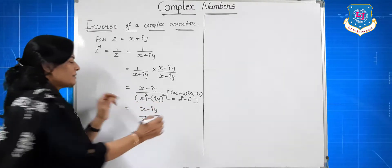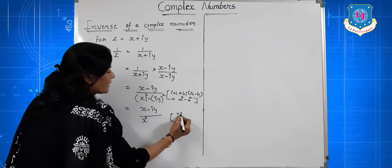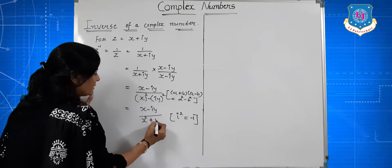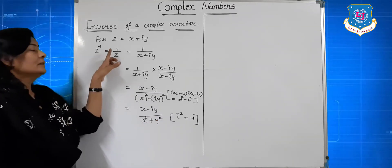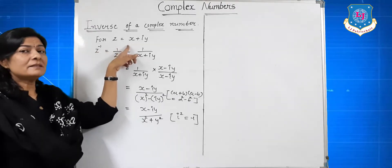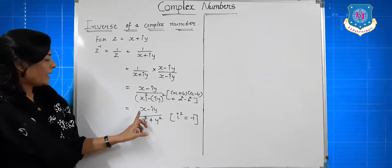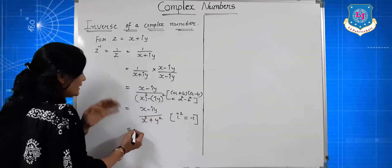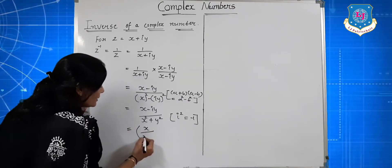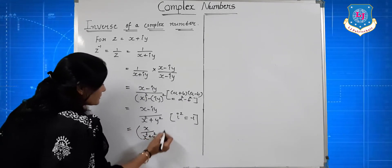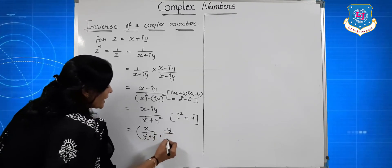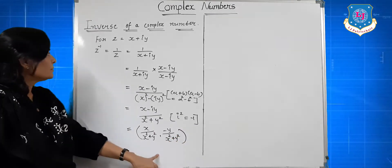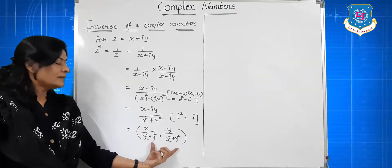The value of i square is equal to minus 1, so minus i square y square becomes plus y square. Therefore, the inverse of complex number z equal to x plus iy is x minus iy upon x square plus y square. This can also be written as x upon x square plus y square, minus iy upon x square plus y square.